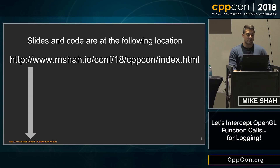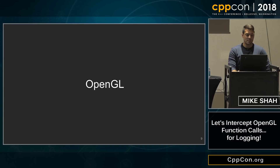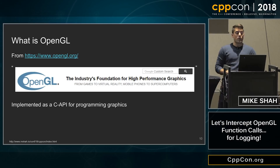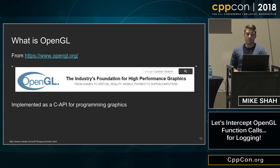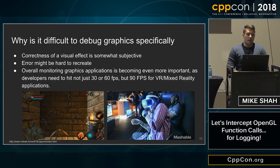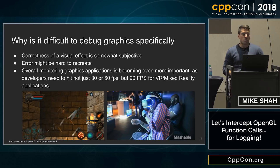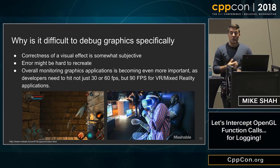Let's begin with the OpenGL part. What is OpenGL? Straight from their website, it's the industry foundation for high-performance graphics — for games, virtual reality, mobile phones, et cetera. And it's typically been implemented as a C API programming library.